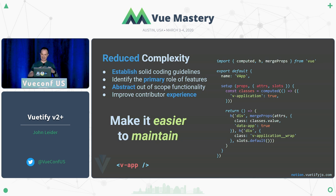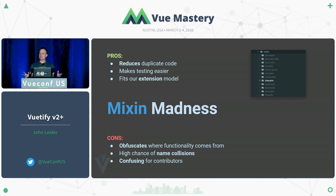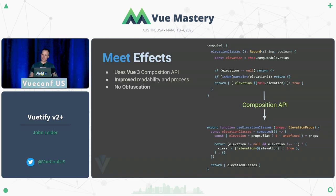One of the biggest issues with Vuetify is that it's popular, so it's hard to keep up with everything — we have to come up with new ways to be more efficient. Mixins were really good in the beginning — they allowed us to reduce code and made testing easy. But the problem is they obfuscate where functionality comes from, there's a high chance of name collisions, and it's really confusing for contributors. Most people that aren't framework libraries don't even use mixins. So we decided to introduce effects.